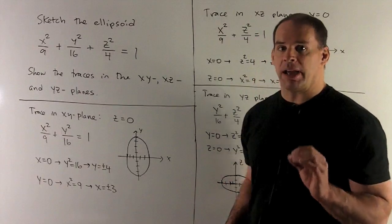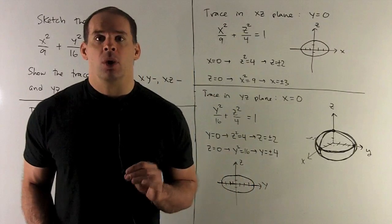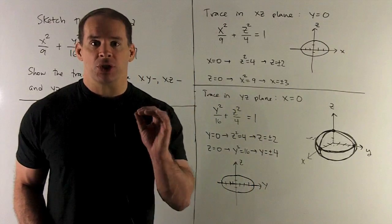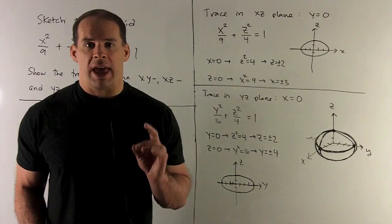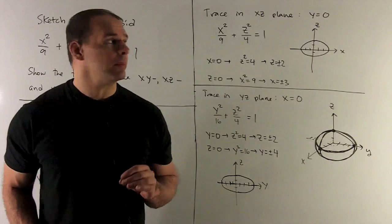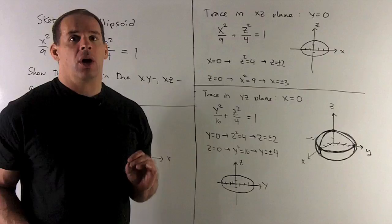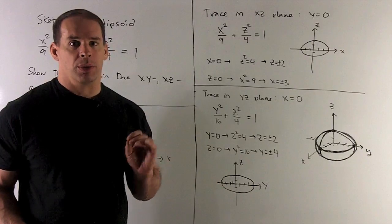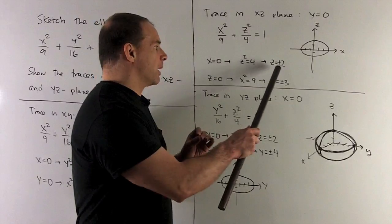Now that's my ellipse. Next trace, we let y be equal to zero, so it's going to be the trace in the xz plane. The equation that comes out, we're gonna have x²/9 + z²/4 = 1. Same idea: let x be equal to zero, we'll let z be equal to zero, see what comes out. If I let x be zero, z is going to be plus minus 2.